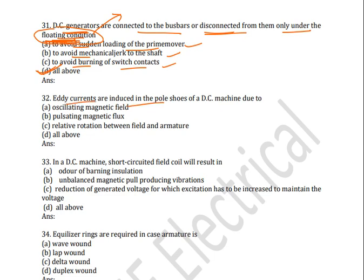Next question: eddy currents are induced in the pole shoe of a DC machine due to which of the following? Options are: oscillating magnetic field, pulsating magnetic field, relative rotation between field and armature, or all of these. The correct answer is relative rotation between field and armature — due to relative rotation between field and armature, eddy currents are induced in the pole shoe of a DC machine.